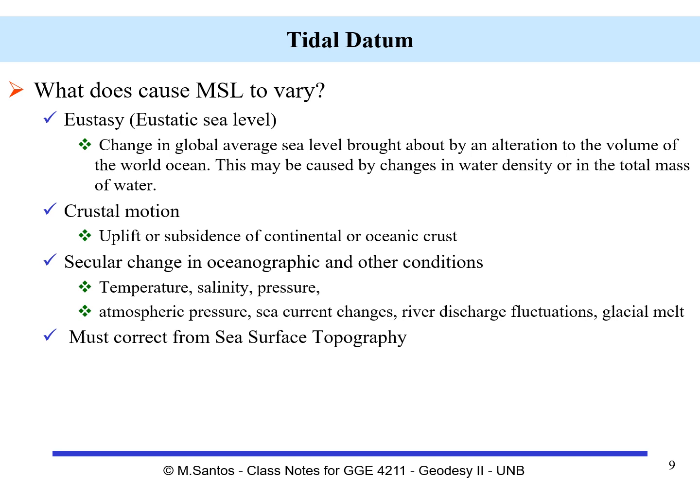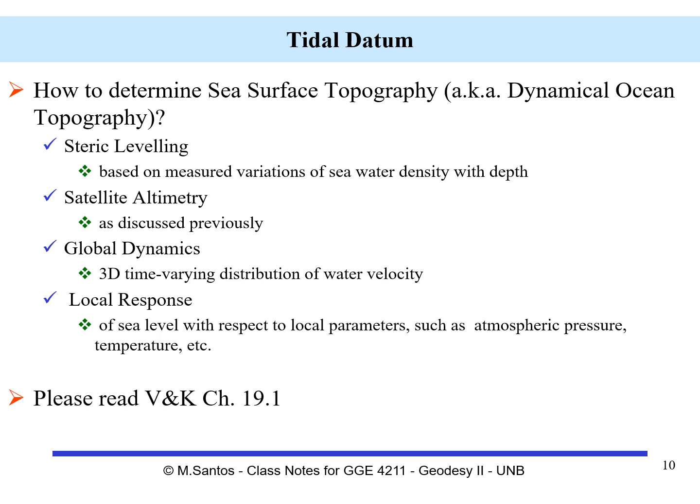One thing that is very important is that we must correct for sea surface topography. Sea surface topography has another term used more often, particularly in the oceanographic arena: the dynamical ocean topography. Methods include steric leveling, based on measured variations of seawater density with depth; satellite altimetry, as we discussed before; and global dynamics, which are 3D time-varying distributions of water velocity.